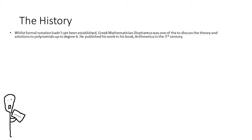While formal notation hadn't yet been established, polynomials and their solutions were developing in mathematics from as early as the 3rd century, and were represented in Greek mathematician Diophantus's book Arithmetica, who was able to describe simple arithmetic involving polynomials up to the 6th degree.